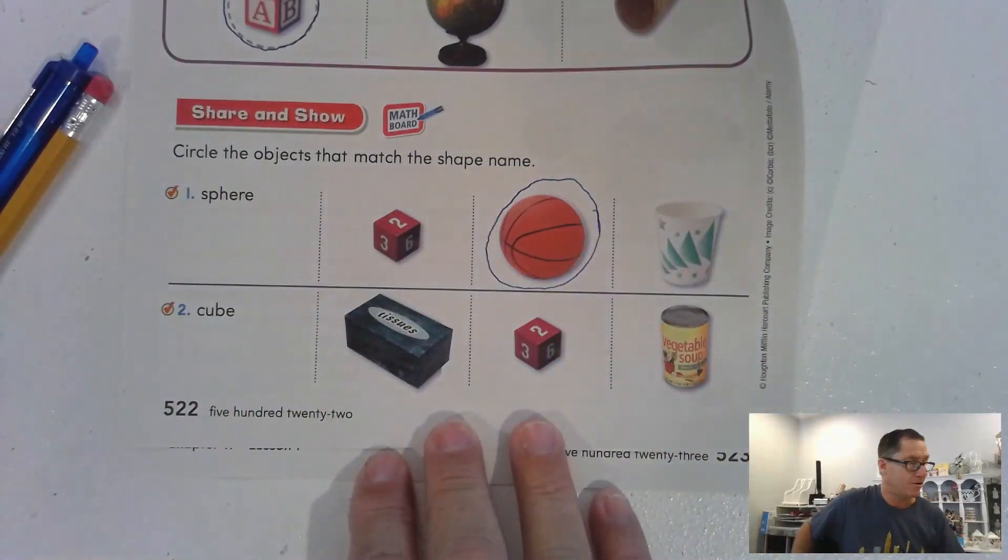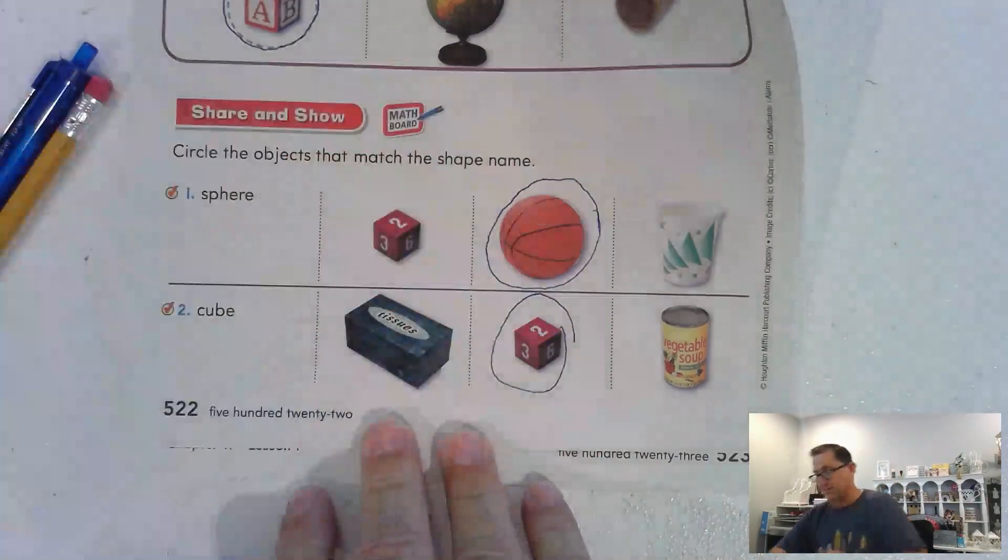Cube. A cube means that all sides are equal. So that's the dice.